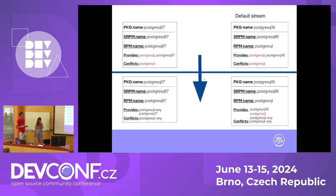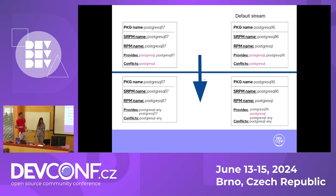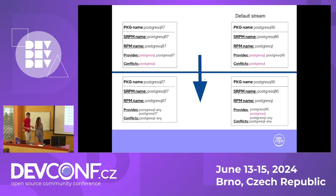So we had to adjust our solution. We removed the postgresql provide from every single stream, added a dash-any symbol to every single package and sub-package, and only the default stream produces the postgresql symbol. This means there is no other option for DNF than to install the default stream. More details can be seen in our live demo.